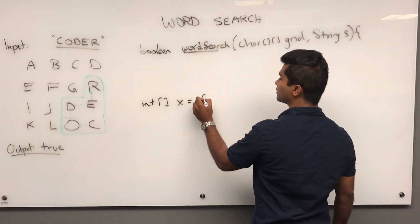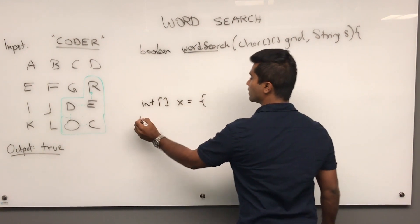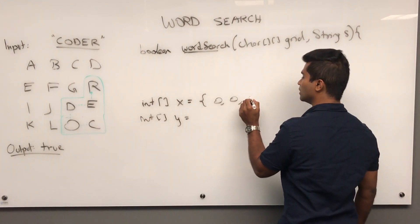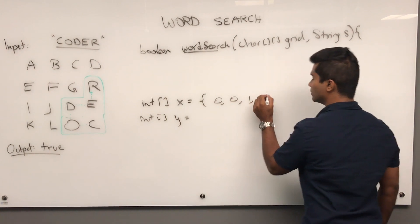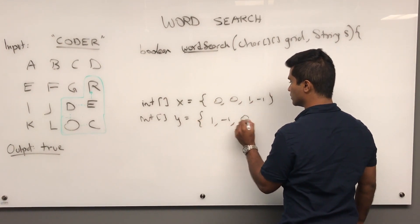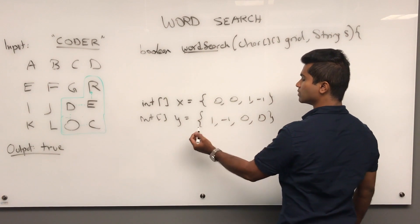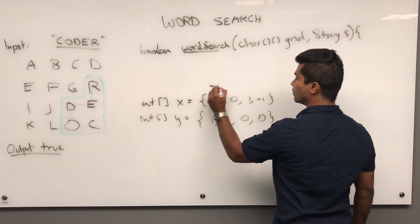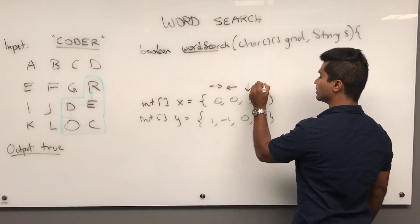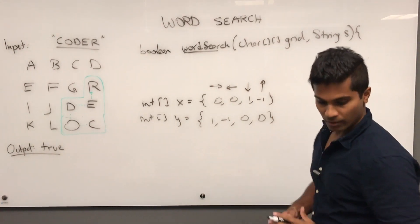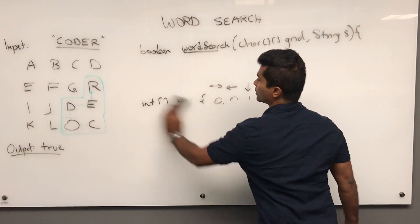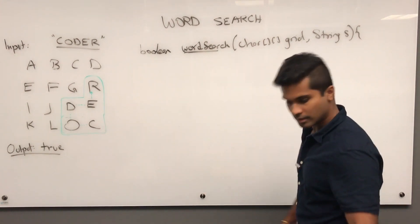So what are those two helper methods and data structures? Since the condition is that we only go up, down, left, and right, we'll define those first: (0,0), (0,1), (1,0), (0,-1) — representing forward, backward, down, and up. Then we have a helper method to check whether we're in bounds or not.